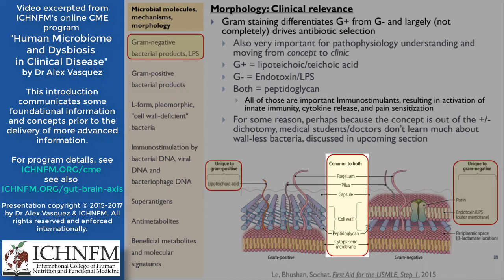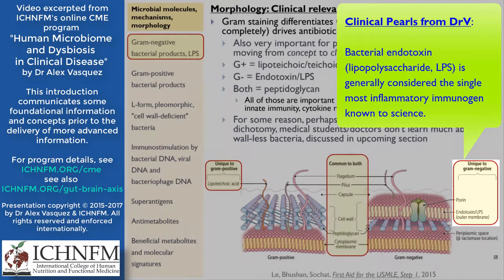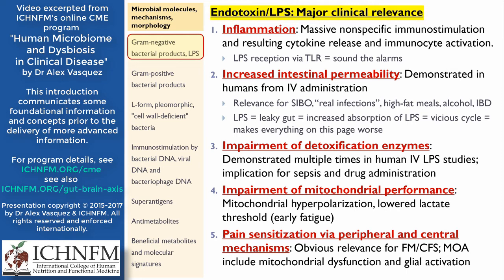Unique to Gram positive bacteria is lipotechoic acid or techoic acid, and unique to Gram negative bacteria is bacterial endotoxin or lipopolysaccharide. The clinical consequences of endotoxin include inflammation, increased intestinal permeability, impairment of the cytochrome P450 detoxification system, impairment of mitochondrial performance, and pain sensitization via peripheral and central mechanisms.